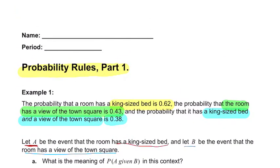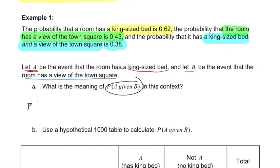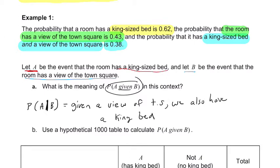What is the meaning, it says here, of the probability of A given B in this context? I'll write it this way. The probability of A given B means two things. It means you start with the given, right? The letter that comes after the sign or after the word given here. So given that the room has a view of the town square. So given, or you could say using a different word, we know the room has a view of the town square. So given a view of town, I'll put TS for town square, we also have a king bed. So that both happen, but that the king bed happens if you already know that you've got a view. So if I tell you the room has a view, you could find the probability knowing that, what's how likely is it that you also have a king bed?